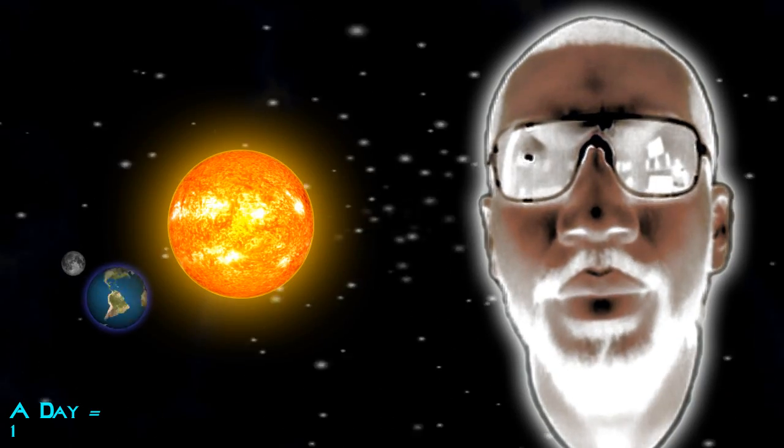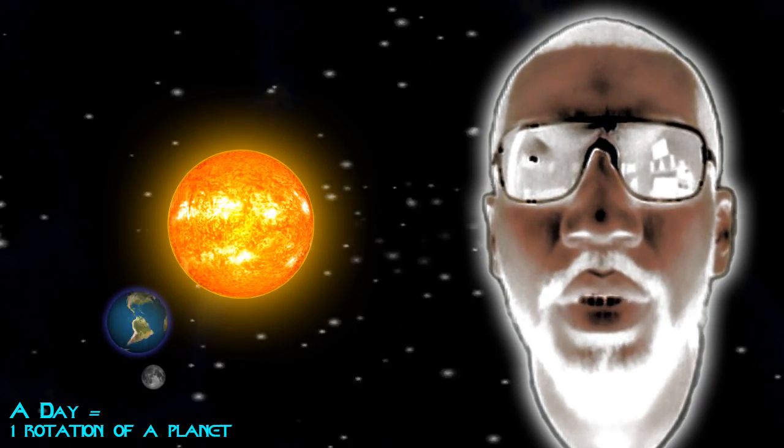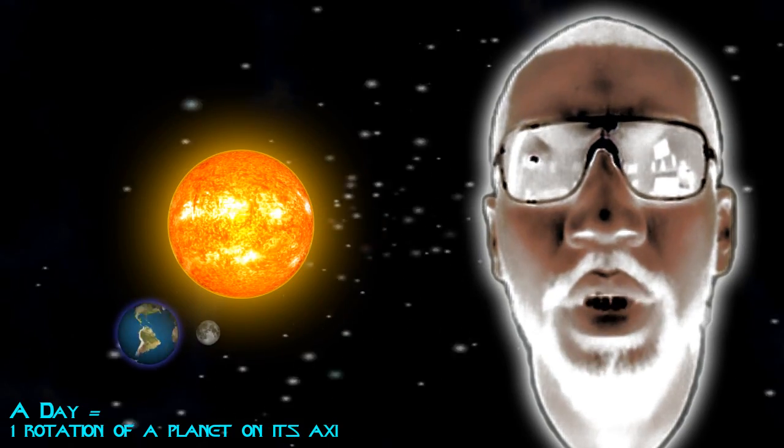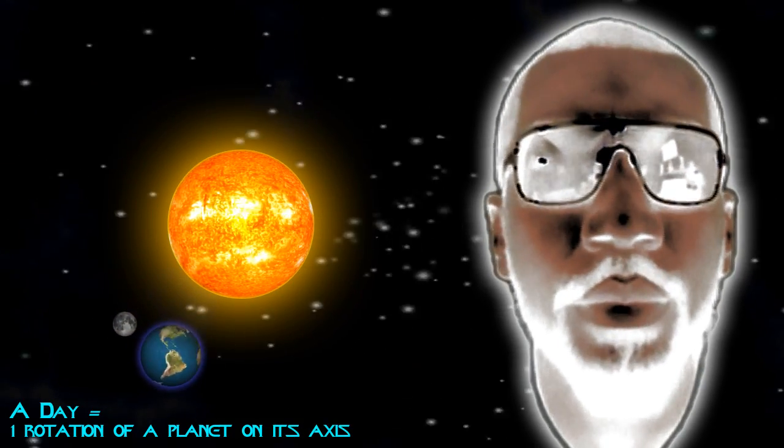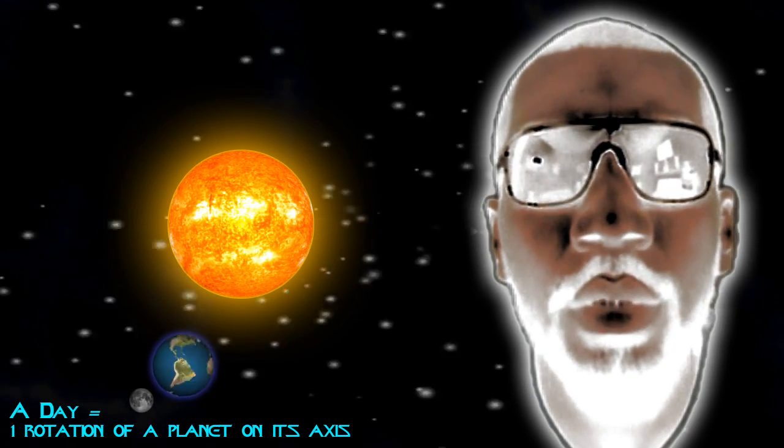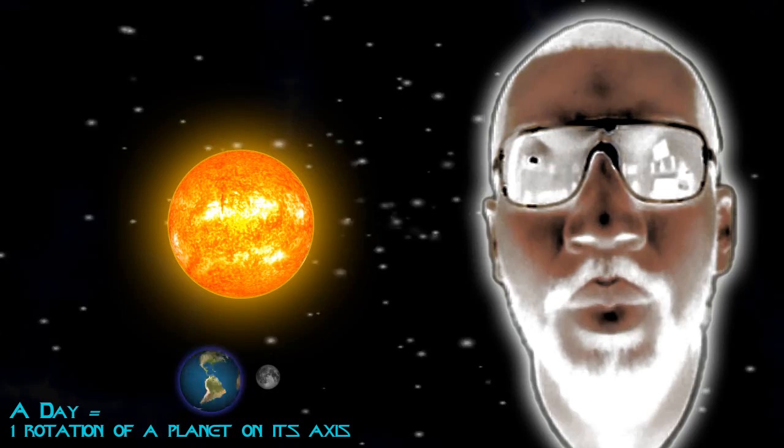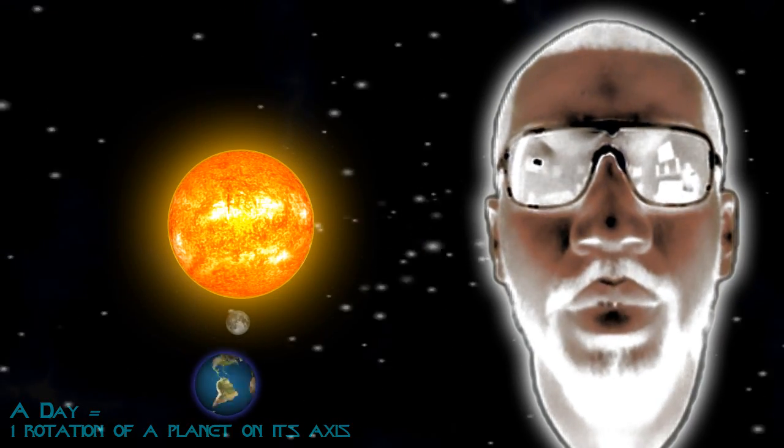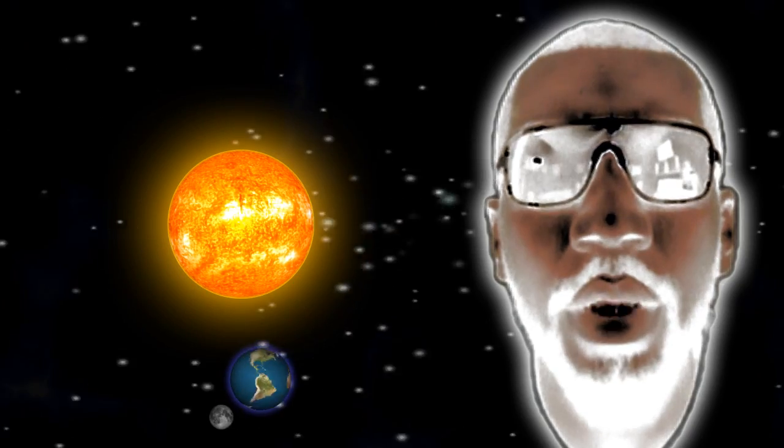What is a day? A day is the amount of time it takes for the Earth to rotate 360 degrees around its axis one time. We average this at 24 hours. If the Earth was smaller, the days would be shorter. If the Earth was larger, the days would be longer.